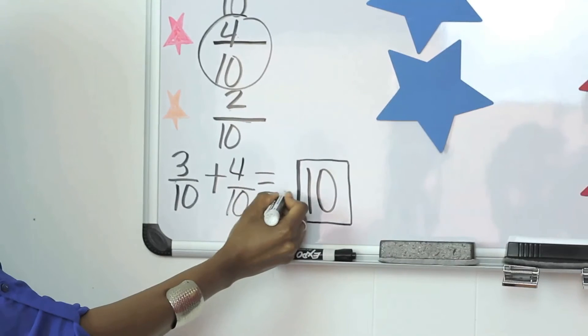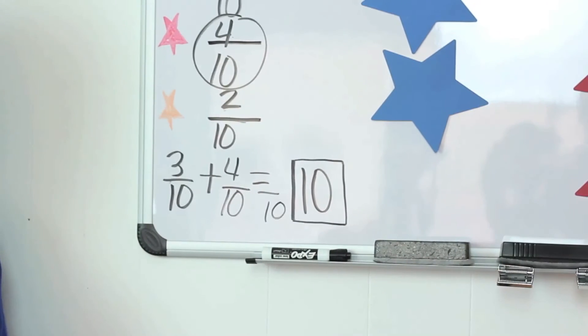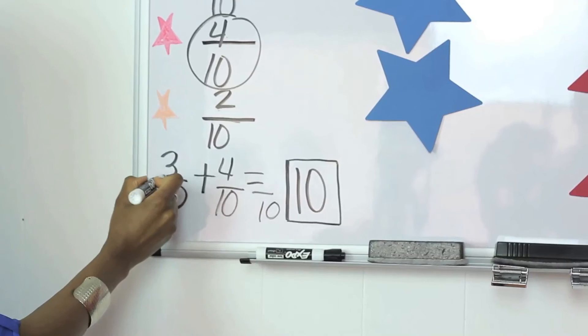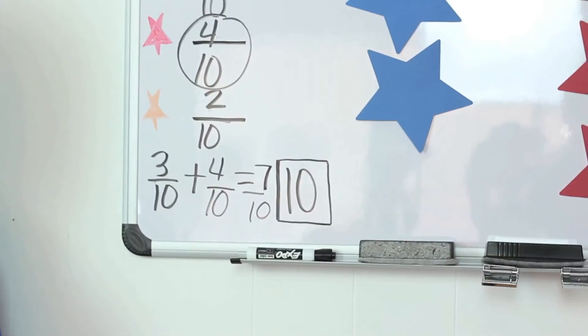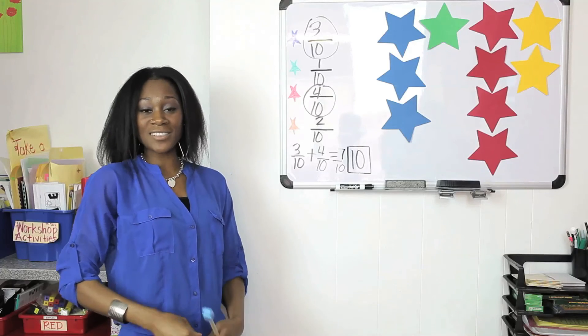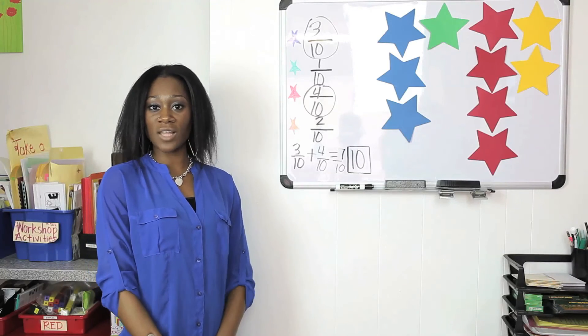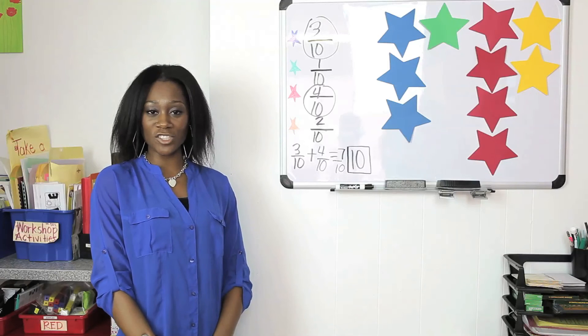Now be sure to explain to the students that the denominator always stays the same and they just add across in the numerator which gives them seven tenths. Now there you have it. That is a fun and engaging hands-on lesson on how to teach fractions.